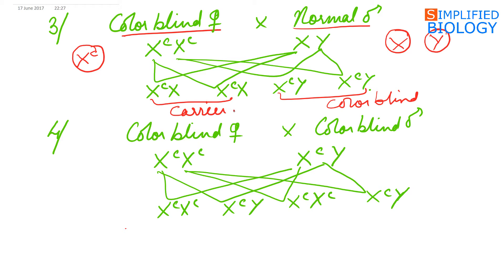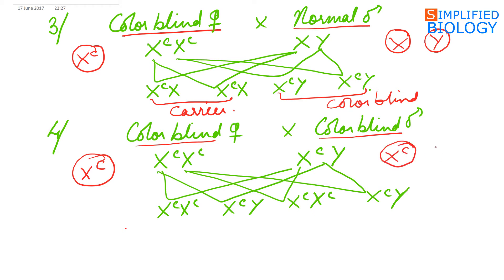In the last cross, a colorblind female is crossed with a colorblind male. The female will produce one type of gamete, all having the colorblind gene. The male will produce two types of gametes: one having the colorblind gene and the other having the Y chromosome. In this case, all the offspring produced will be colorblind.